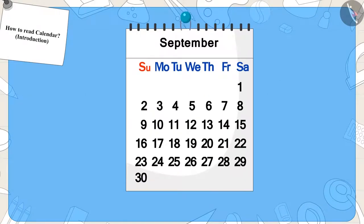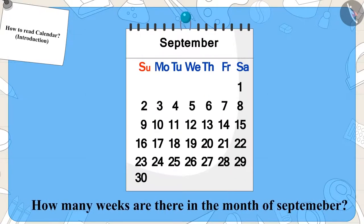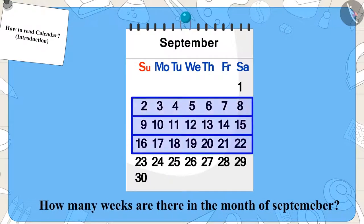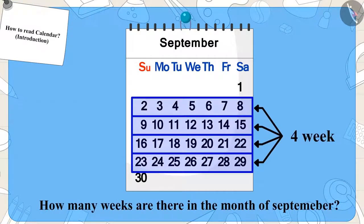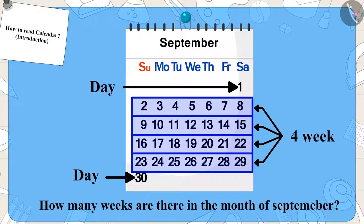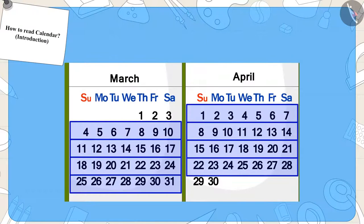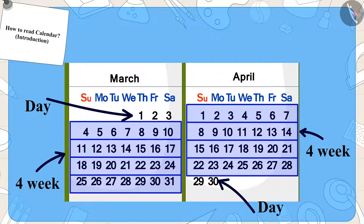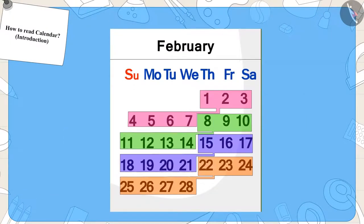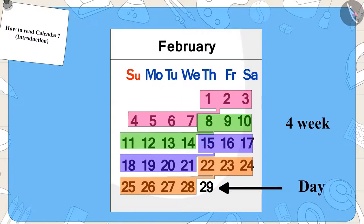Children, can you tell how many weeks are there in the month of September? Exactly — four weeks and a few days. And if you look closely, you will find that there are four weeks and a few days in every month. There are four weeks only in the month of February, and in certain years it is four weeks and one day in the month of February.